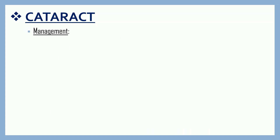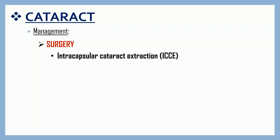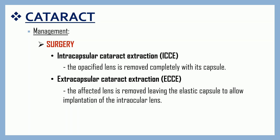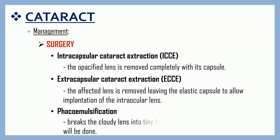Management for cataracts is surgery only. First is intracapsular cataract extraction or ICCE, in which the opacified lens is removed completely with its capsule. Next is extracapsular cataract extraction, where the affected lens is removed, leaving the elastic capsule to allow implantation of the intraocular lens. Finally, phacoemulsification is the most common cataract surgery. It is done by inserting a small ultrasonic probe that breaks the cloudy lens into tiny fragments, which are then suctioned out of the capsule, followed by an intraocular lens implant.